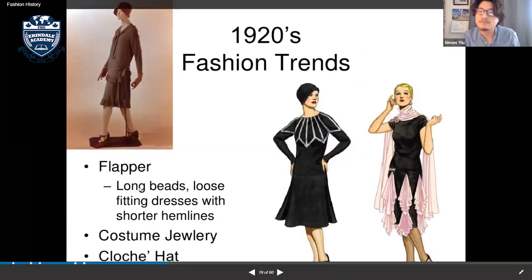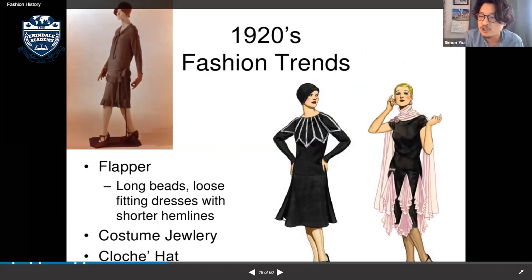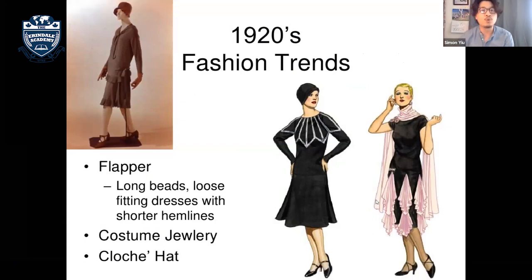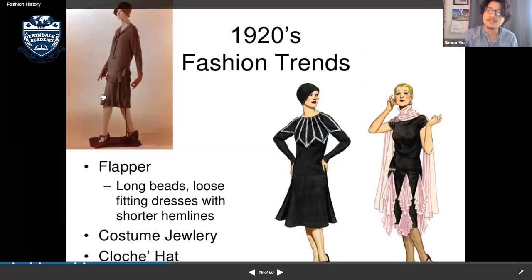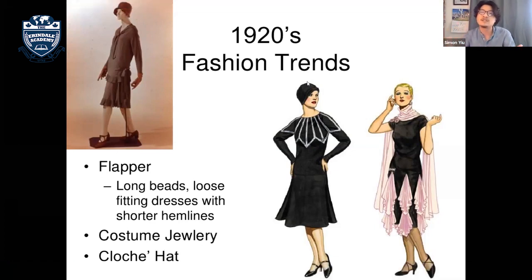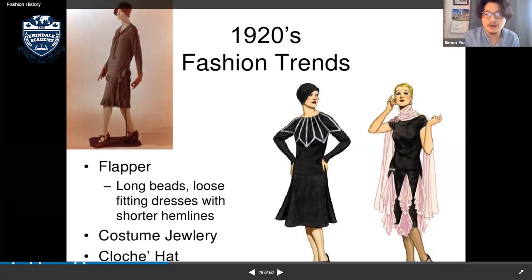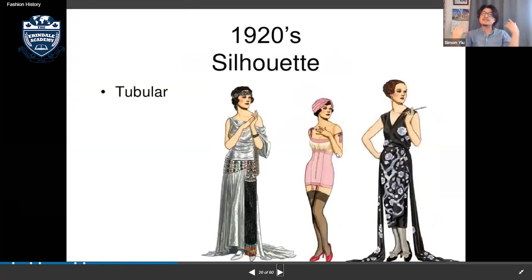The fashion trends of the 1920s included the flapper look — long beads, loose-fitting dresses with shorter hemlines. The hemline rose from the feet toward the knee. They also had costume jewelry and cloche hats, which were very popular and could even be handmade.